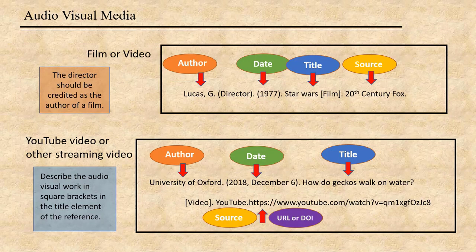So what about films or media? In the case of a film, the director should be credited as the author, but designate them as 'Director' in parentheses after their name. After the title, which is in regular font, put the word 'Film' in square brackets, followed by a period, and the source information for a film is the studio. For a YouTube or other streaming video, put the word 'Video' in square brackets, followed by a period, after the title.